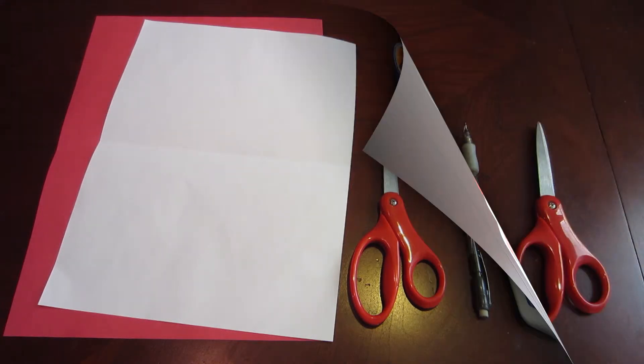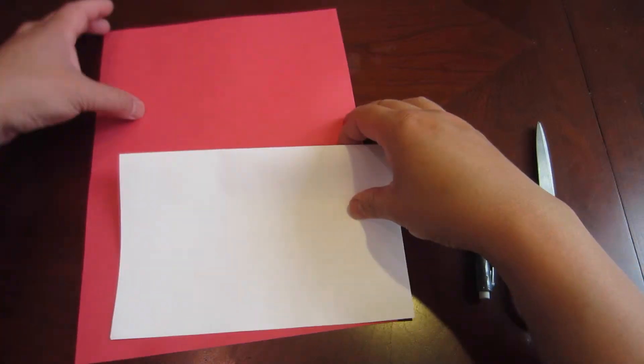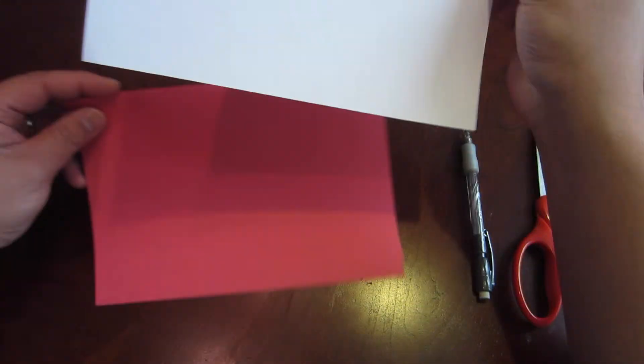Let's get started. Take two of the colored paper and fold them in half. Make sure the white paper is on the outside.